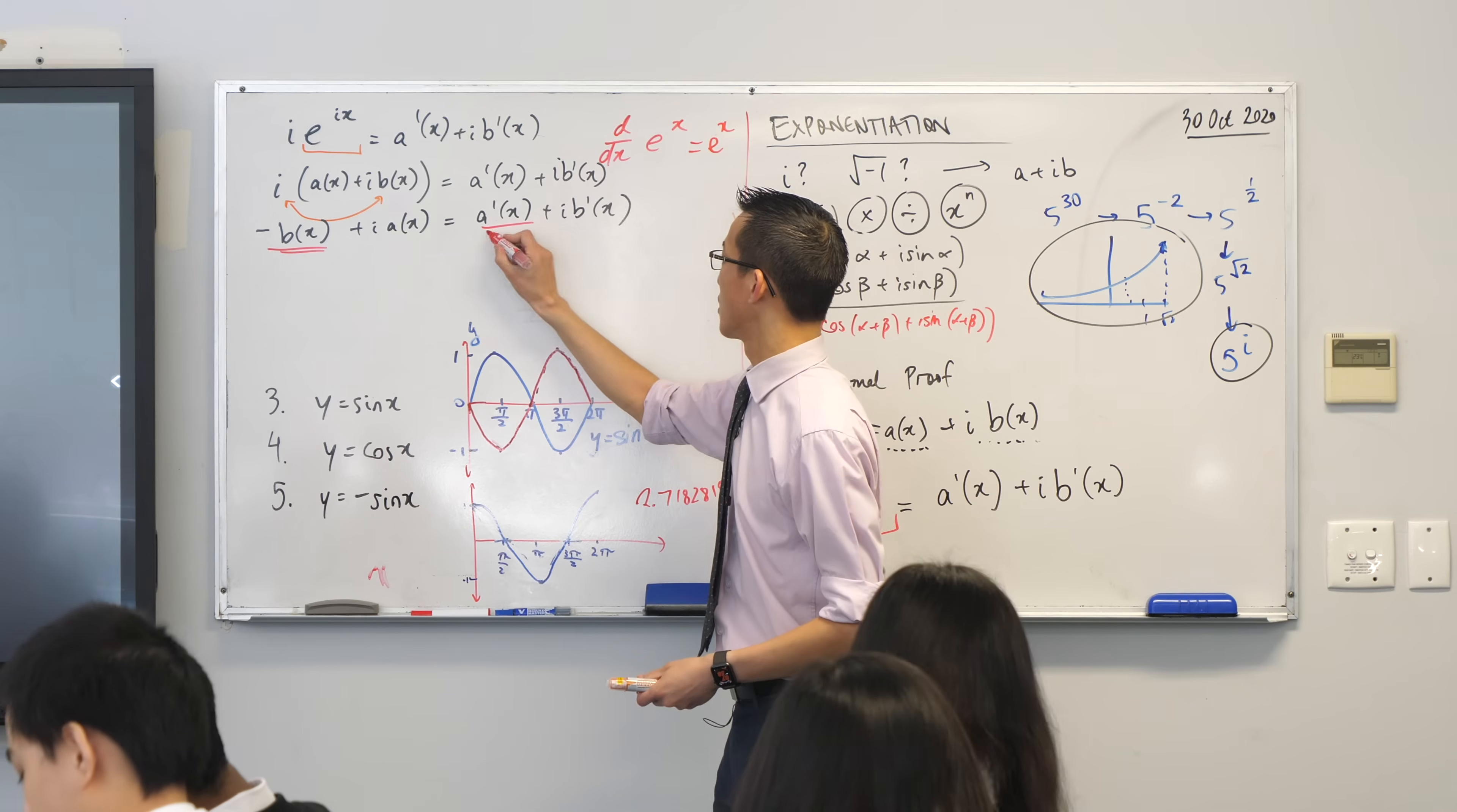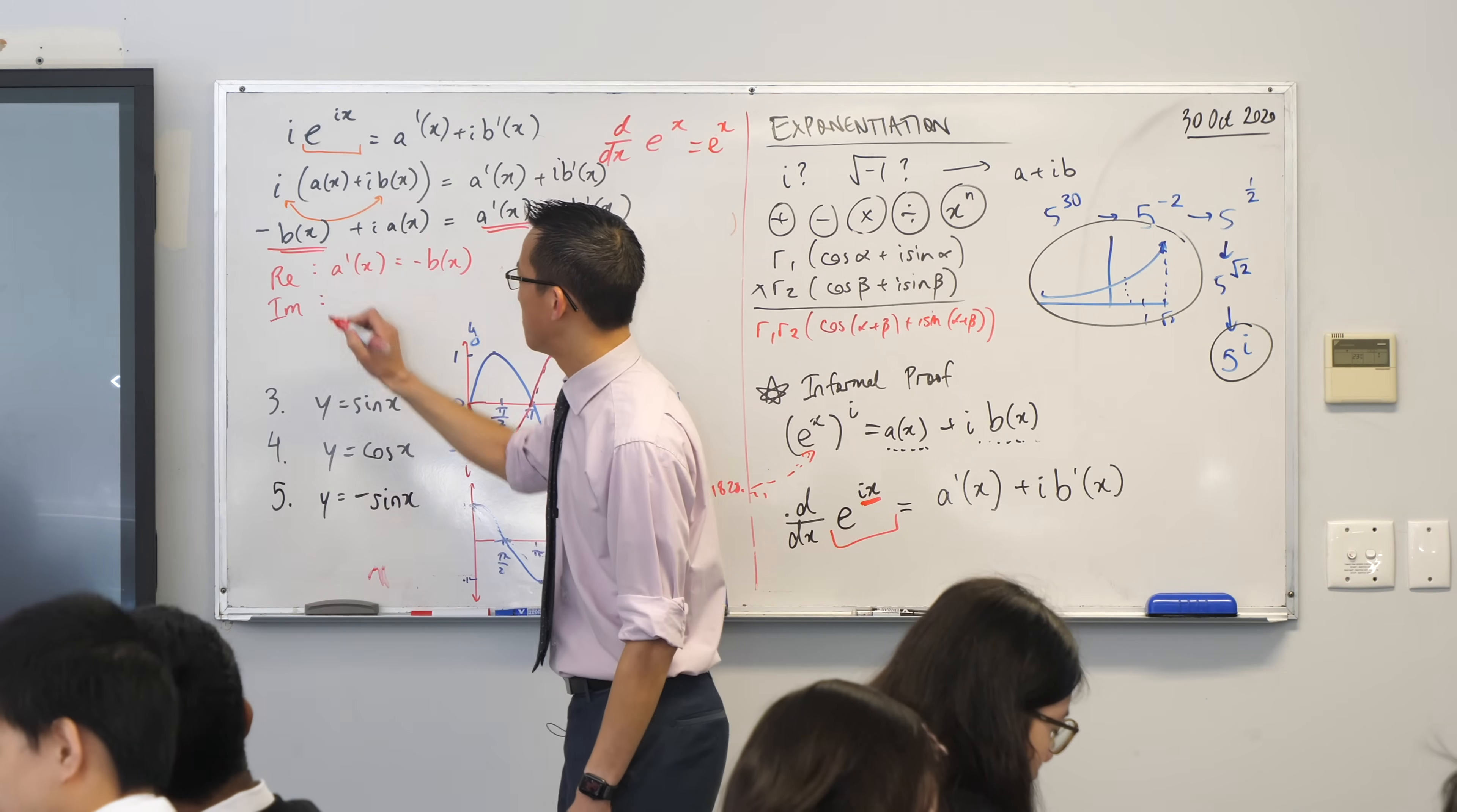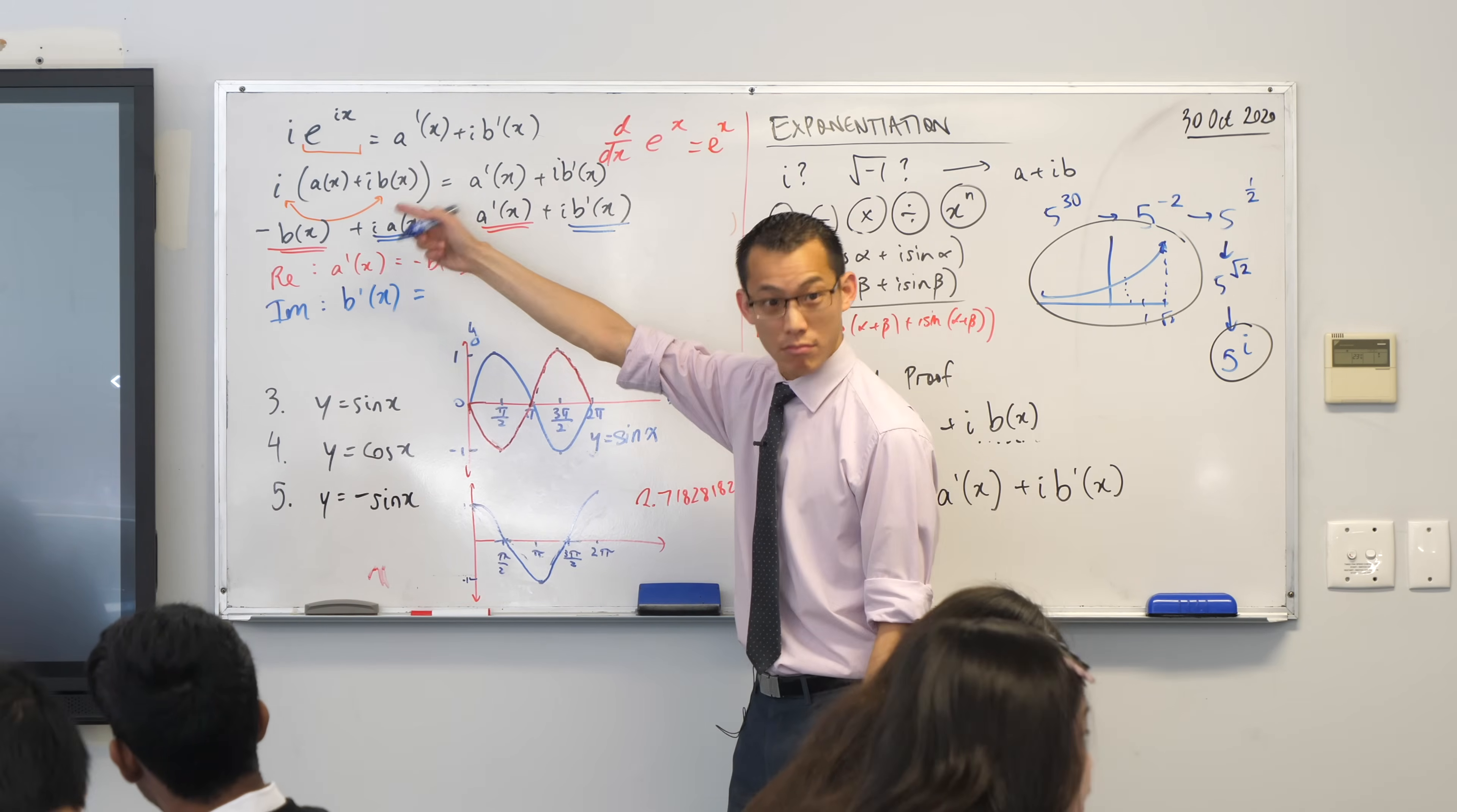Let's do the real bits first. Real. Real. Let's just jot that down. I'll keep it in red. From the real comparison, I get that there's some function, a dash, that if I differentiate it, you get minus b. And then I have to look at the imaginary part. I think this is the one that I... Here it is. And here it is. Can you tell me what are the bits that I'm going to write together when I say the imaginary part? What's equal to what? B dash of x. Yeah, so b dash of x equals a of x.